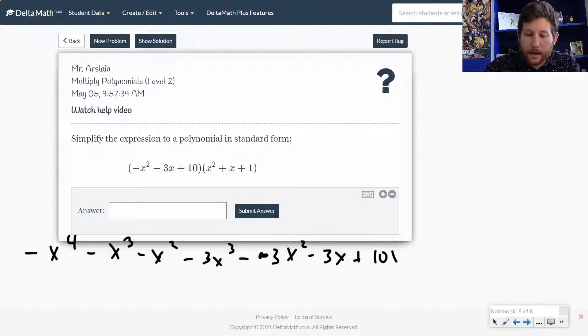All right, so now let's go ahead and combine. So I've got negative x to the fourth. Let's look at my x cubed terms. I've got minus x cubed minus 3x cubed, so that would be minus 4x cubed.